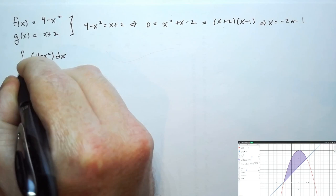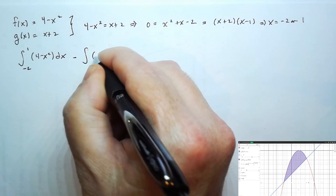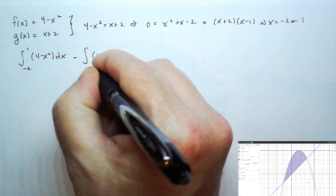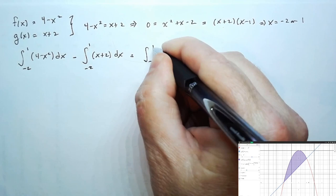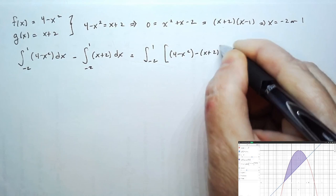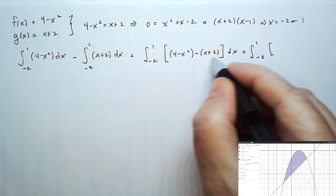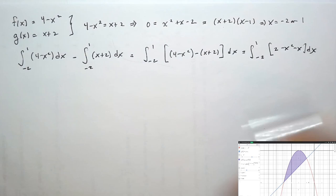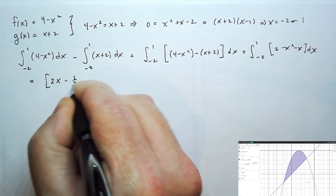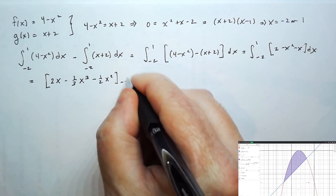So we take the area under the top curve, 4 minus x squared, integrate from negative 2 to 1, then subtract the integral of g(x) from negative 2 to 1 as well. We can combine these as a single integral whose integrand is the top function minus the bottom function, giving us the integral from negative 2 to 1 of (2 minus x squared minus x) dx. Finding an antiderivative, we get 2x minus one-third x cubed minus one-half x squared, evaluated from negative 2 to 1.